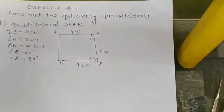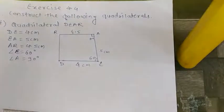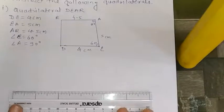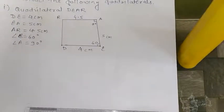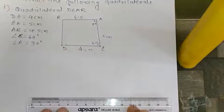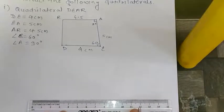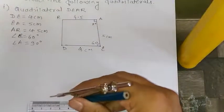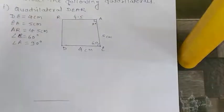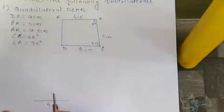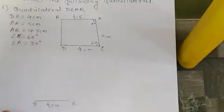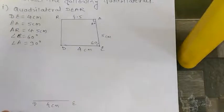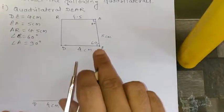Let's get started without wasting time. First, take the scale and plot side DE — that is exactly 4 cm. While writing steps, write Step 1: Draw side DE with measurement 4 cm.